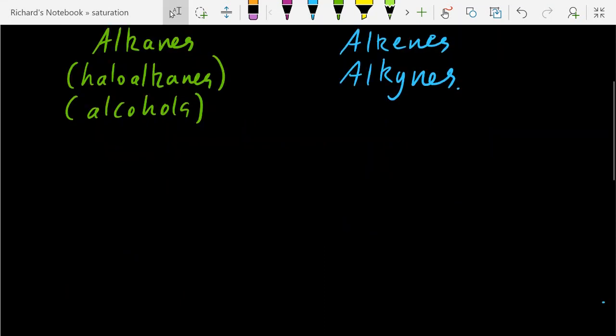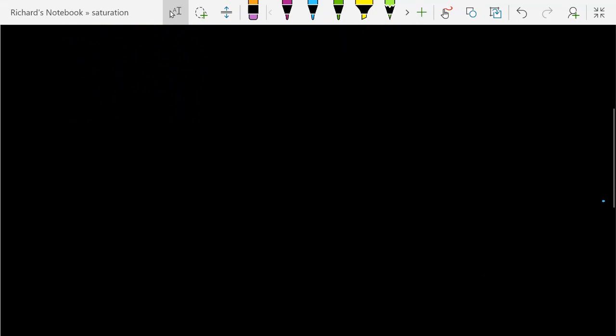So that begs the question: saturated with what? Well, it's actually hydrogen. If we take a look at the unsaturated compound ethene, I could actually add more hydrogen if I wanted to. I could break this bond here and pop on a cheeky hydrogen and hydrogen.